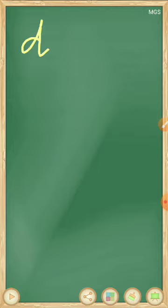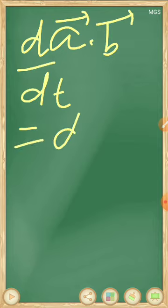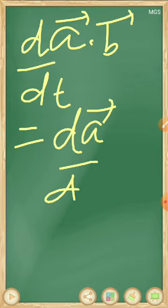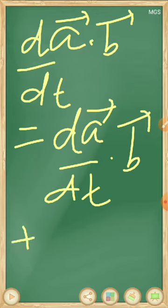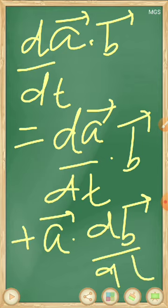Now let us see one important rule of differentiation: d/dt of (A · B) is equal to (dA/dt) · B plus A · (dB/dt). We will use this formula just now.